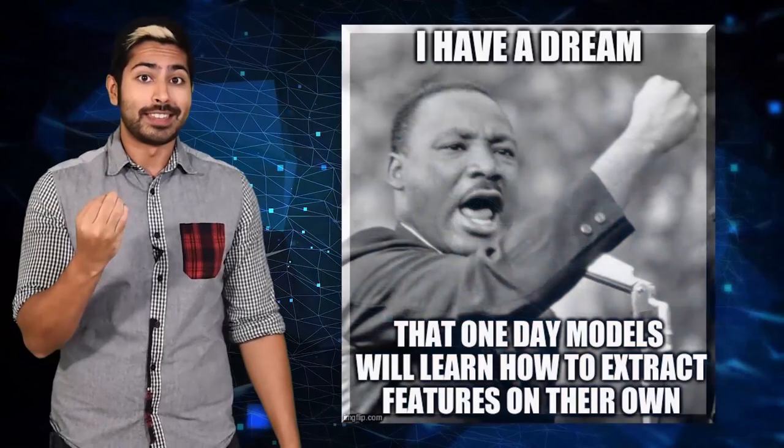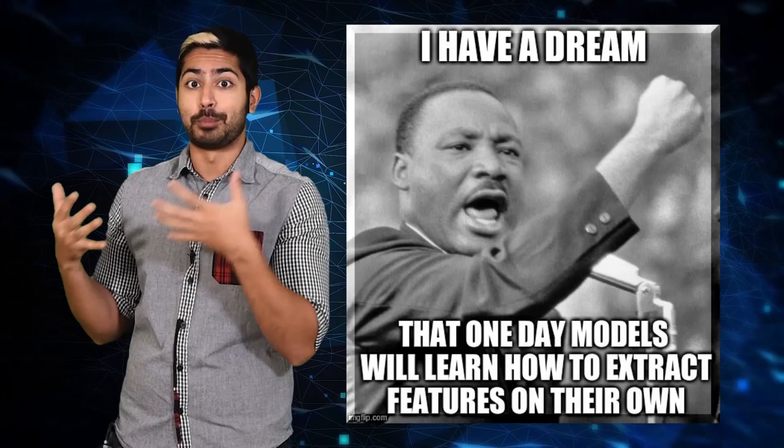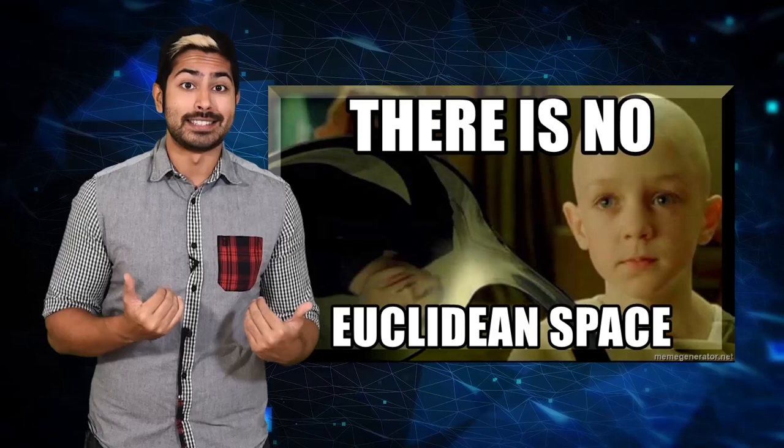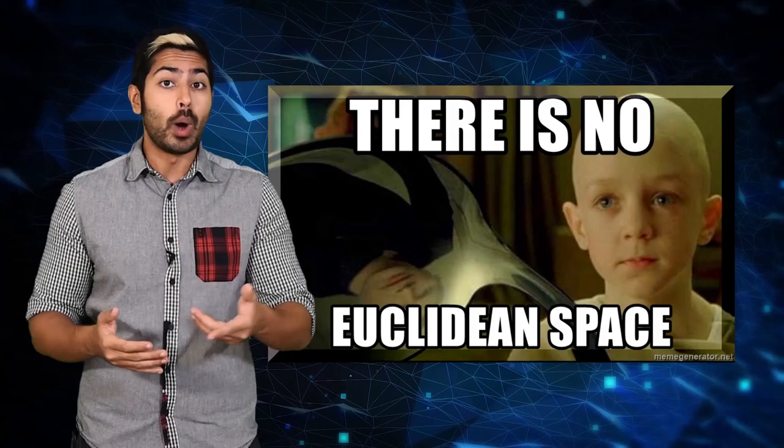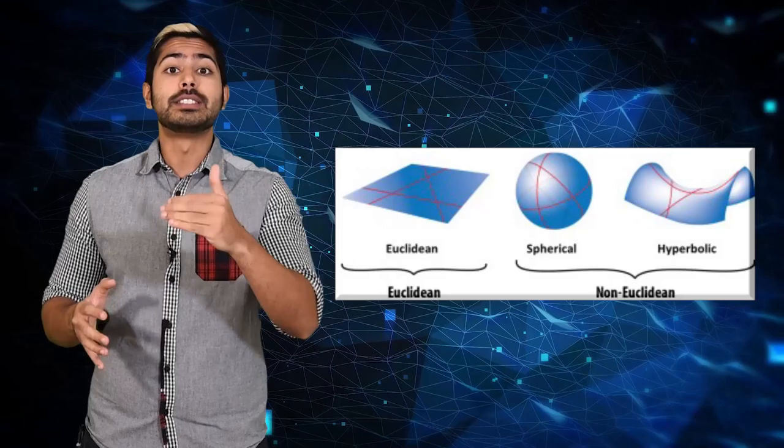You would think that we could just feed this type of data to a deep neural network and assume that it would be able to properly parse it, right? Neural networks aren't that great at interpreting this type of data. The reason being, deep learning generally works well on what's called Euclidean data. Graphs and 3D objects, those are considered non-Euclidean datasets.